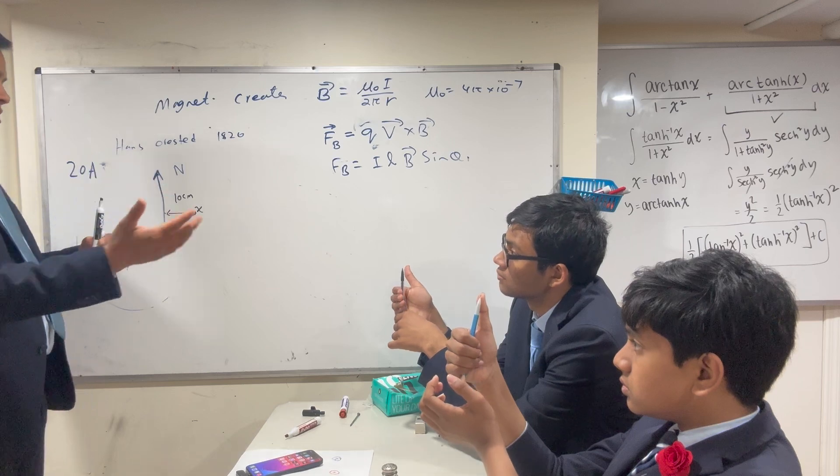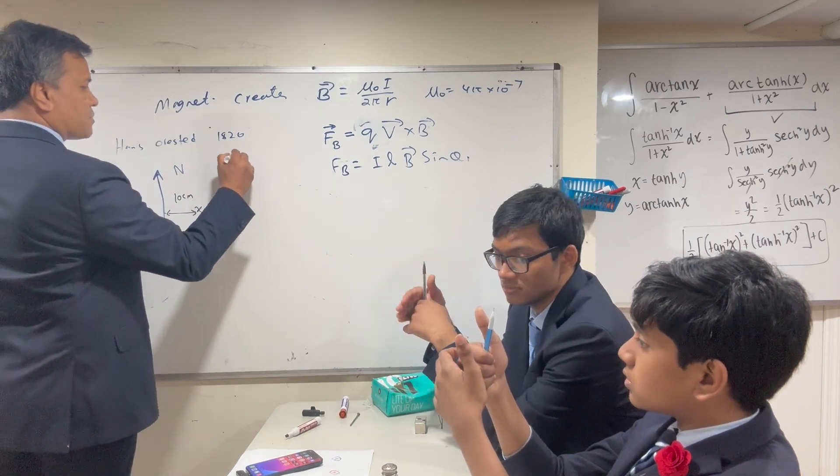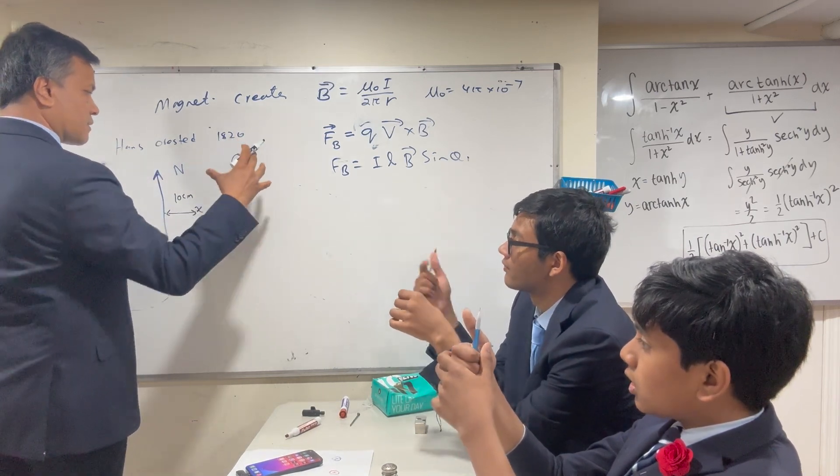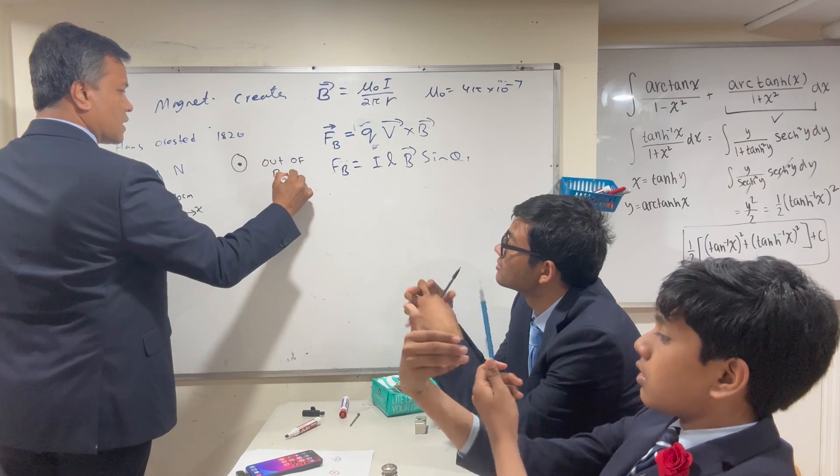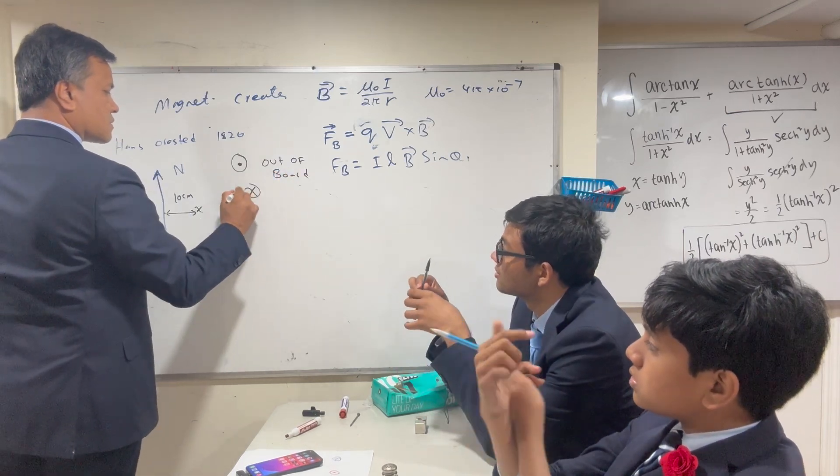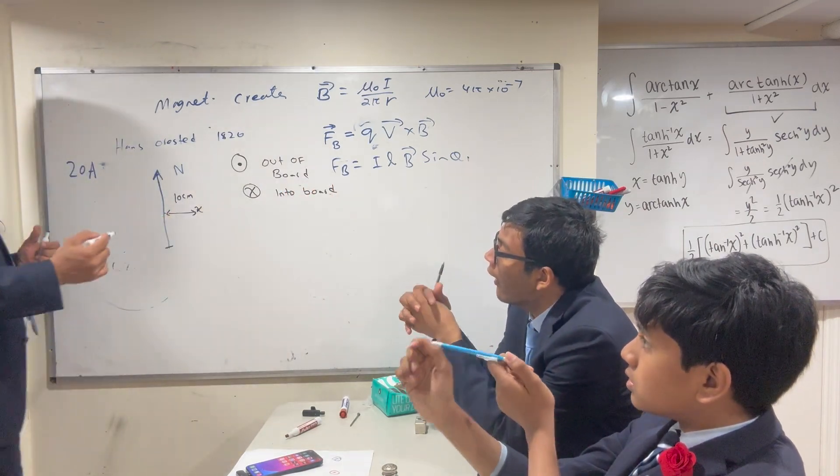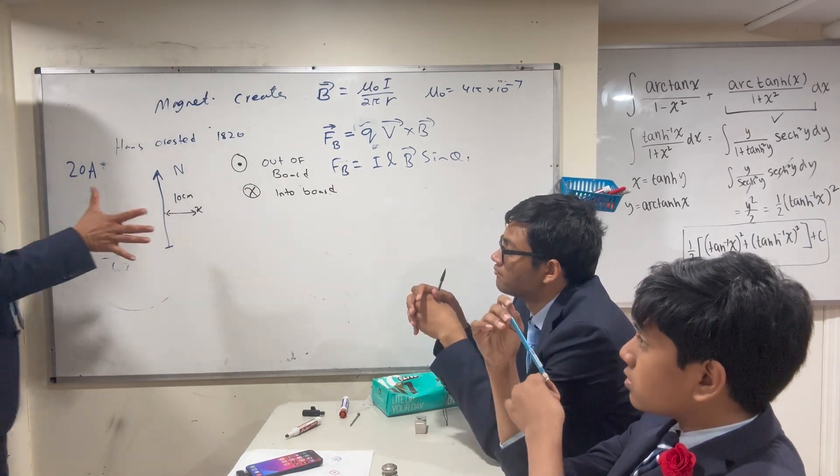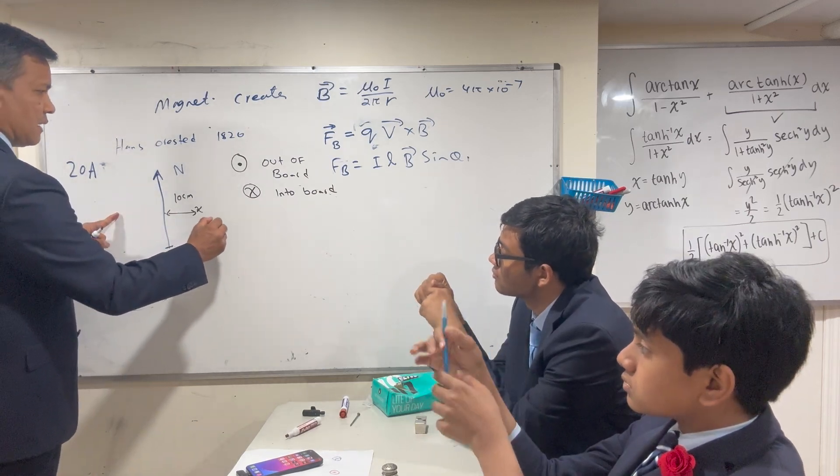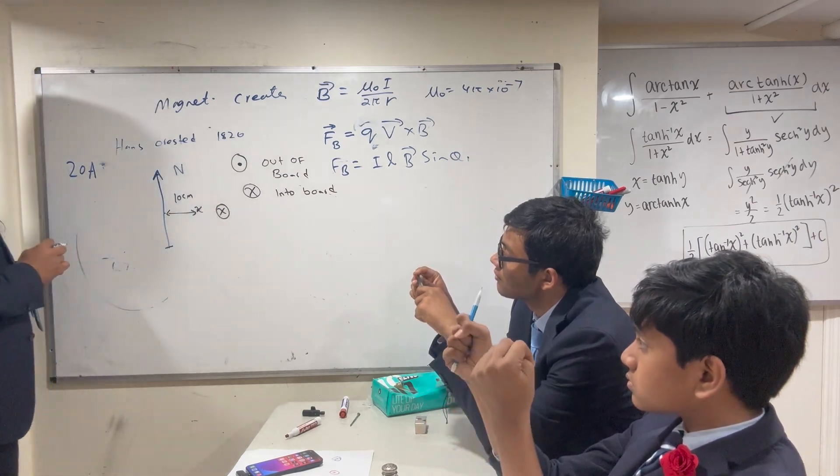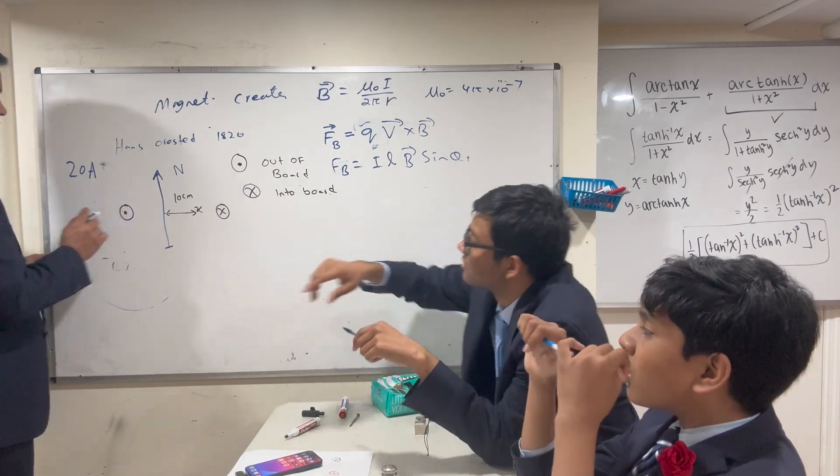Isaac, can you tell me the magnetic field at location x? I'm going to tell you two things: dot means out of the board, and cross means into the board. At location x, what is the direction of the magnetic field? Into the board. Yes. What about over here? Also into the board? No, out of the board. Oh wait, I thought you said here. Are you okay?